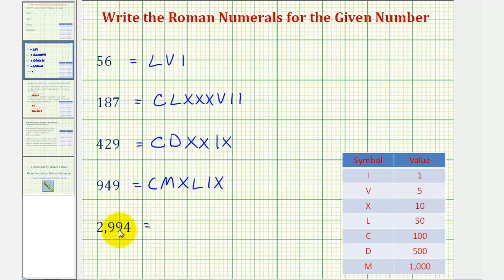Finally, for 2,994, we'll start with 2,000, which is two m's. Now for 900, again, we'll have to use 100 before 1,000, or a c before an m, meaning we'll subtract 100 from 1,000 to get 900.